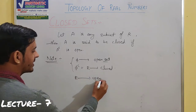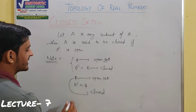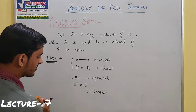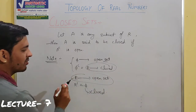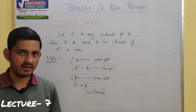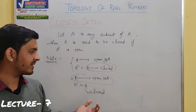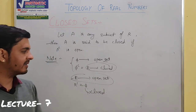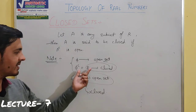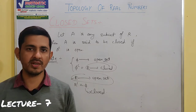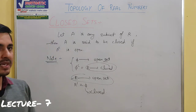Now R is also an Open Set — we covered this in previous videos. The complement of R is Phi. So R is Closed too. So R is both Open and Closed. Similarly, Phi is both Open and Closed. So if in an exam you are asked to give an example of a set that is both Open and Closed, the best examples are Phi or the Set of Real Numbers R.